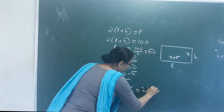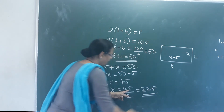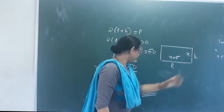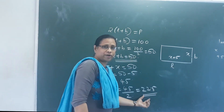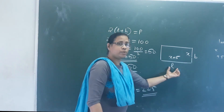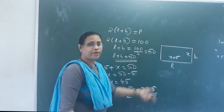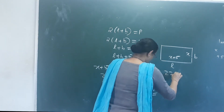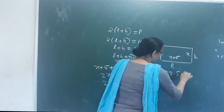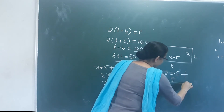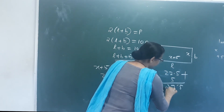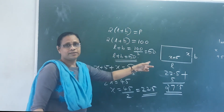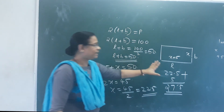2X equals 45. X equals 45 divided by 2, which is 22.5 cm. The breadth is 22.5 cm. The length is 22.5 plus 5, which equals 27.5 cm.